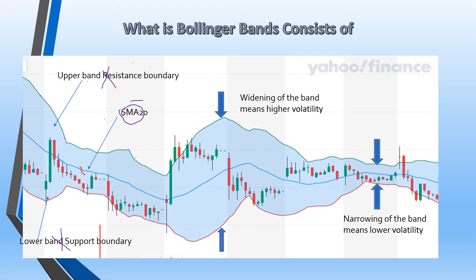Bollinger Band shows the price spread in the last month. The higher the price fluctuation during this period, the wider the Bollinger Band will be. An increase in Bollinger Band width indicates an increase in volatility and strength of the trend — wherever you see a wider band. And a decrease in its bandwidth means a decrease in volatility and strength of the trend, wherever the band is narrowing.